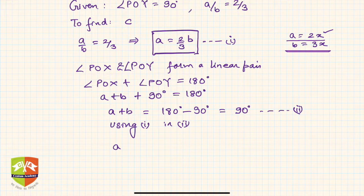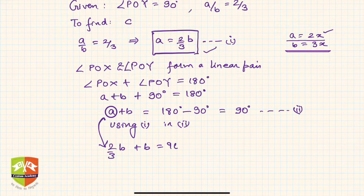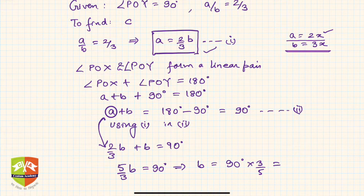You will get a as 2/3 times b, so I am writing 2/3 times b in place of a plus b equals 90 degrees. Taking LCM, you will get 5/3 times b equals 90 degrees. So this implies b will be equal to 90 degrees times 3/5, which is 54 degrees.